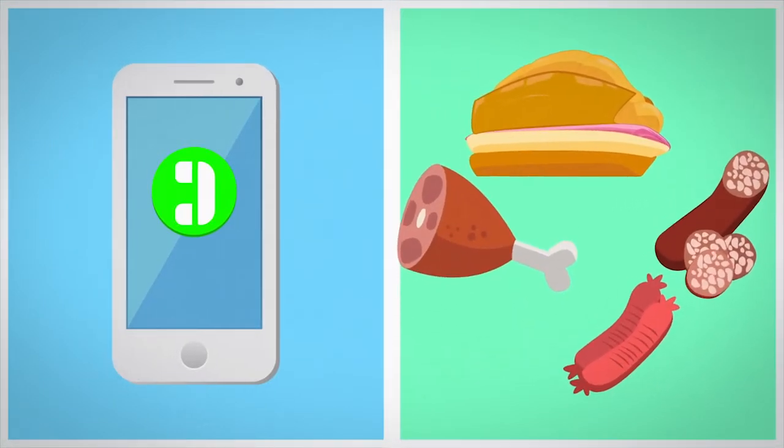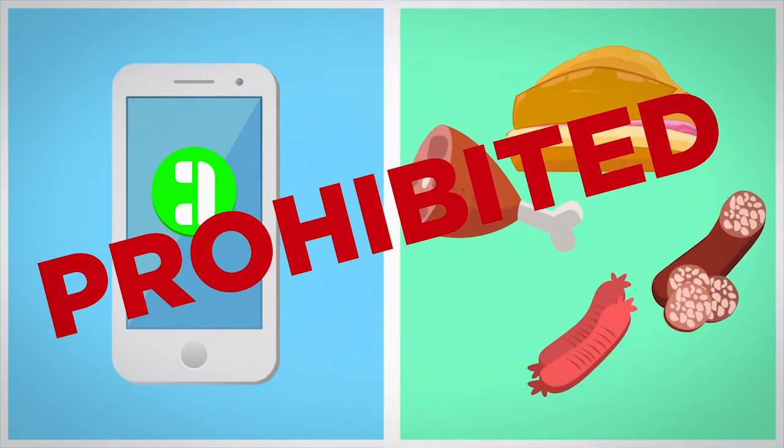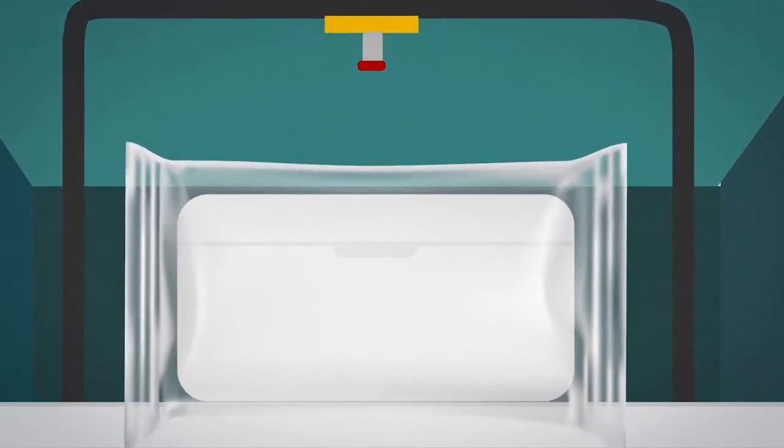Cell phones and fresh or processed pork products are prohibited and must not be brought into the farm. Food for staff should be entered through the double-bag technique in absence of the UV light chamber.